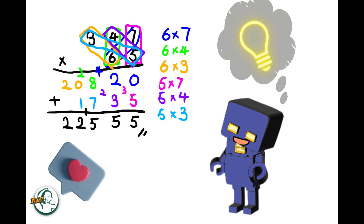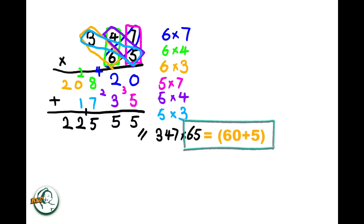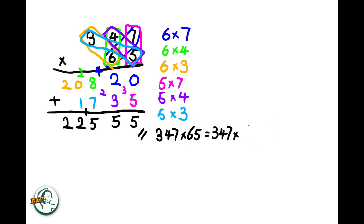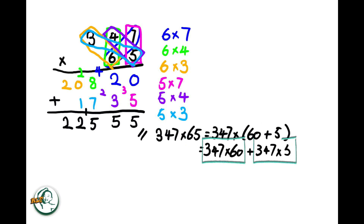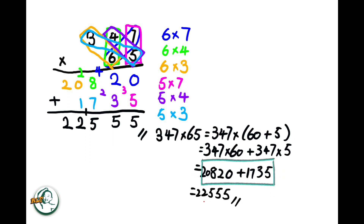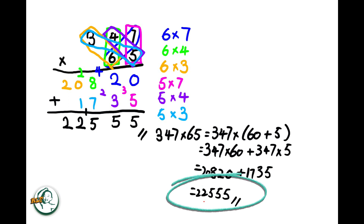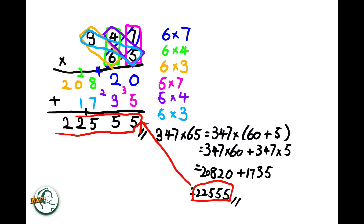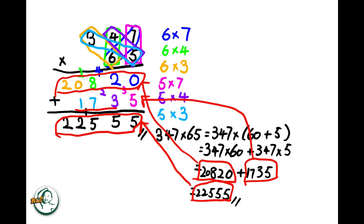Let's delve into the rationale behind this method. Consider 65 as 60 plus 5. Now, we can express 347 times 65 as 347 times (60 plus 5). This expands into 347 times 60 plus 347 times 5. Calculating, we get 20,820 for 347 times 60 and 1,735 for 347 times 5. Adding these results together, 20,820 plus 1,735 equals 22,555. So this 22,555 equals to this part. This 20,820 equals to here, and 1,735 is here. And this explains why we need to add these two numbers here in the column method.